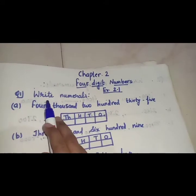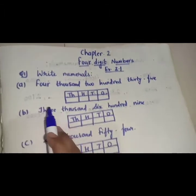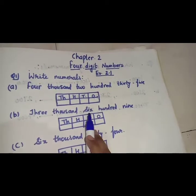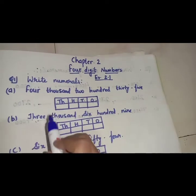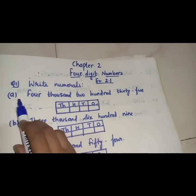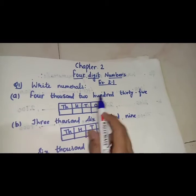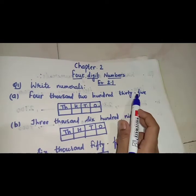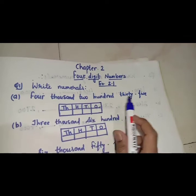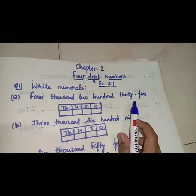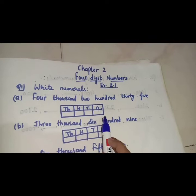Here is your first question: write numerals. You have been given three questions and you have to write this word form in numeral form. First read this question carefully. Question A: four thousand, two hundred and thirty-five. Again we will read this: 4,235. So first we have to make a place value chart.